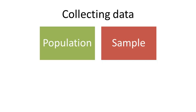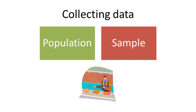That raises the interesting question of how do I choose the sample so that it does in fact represent the whole population? How do I avoid a bias in my results because I asked the wrong people? For example, if I only asked the Year 5 students what they want in the tuck shop, I'm going to end up with a menu full of sugar. How do I choose a fair, representative sample? We'll come back to these questions in a moment.